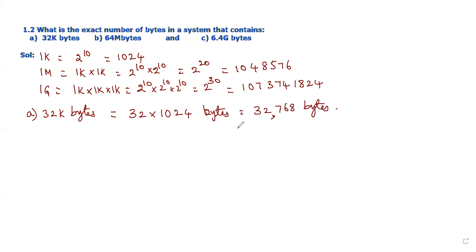The second part is 64 megabytes. Now substitute one mega value, then it becomes 64 into mega equals 1048576 bytes, which is equivalent to 67,108,864 bytes after calculating on a calculator.